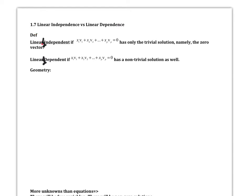Definition: if we are linearly independent, if we take the homogeneous equation and it only has the trivial solution — namely the zero vector — then we are linearly independent. If we are linearly dependent, if the homogeneous equation has a non-trivial solution besides the zero vector, then we are linearly dependent.